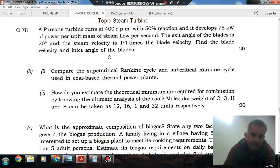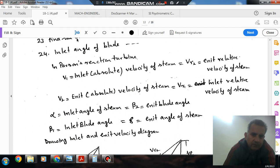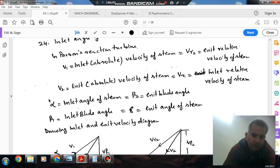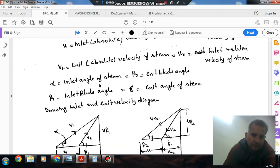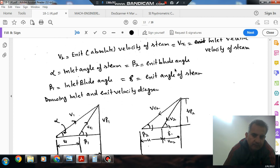Find the blade velocity and inlet angle of the blades. In a Parsons reaction turbine, the absolute inlet velocity of steam equals the exit relative velocity, so V1 equals Vr2. The exit absolute velocity equals the inlet relative velocity, so V2 equals Vr1. Alpha is the inlet angle of steam, and beta2 is the exit blade angle.